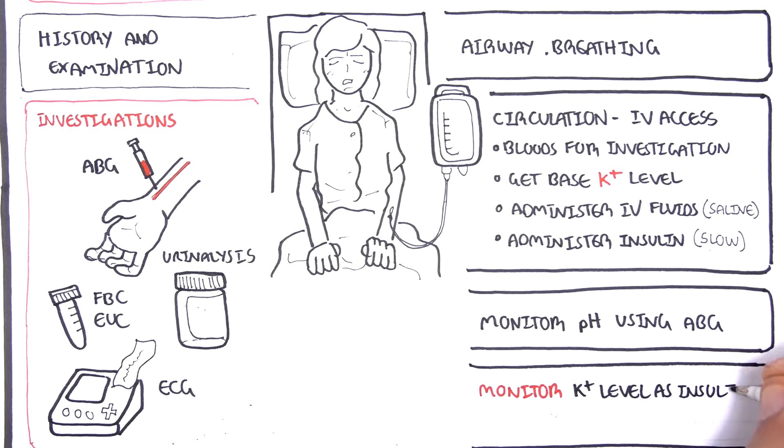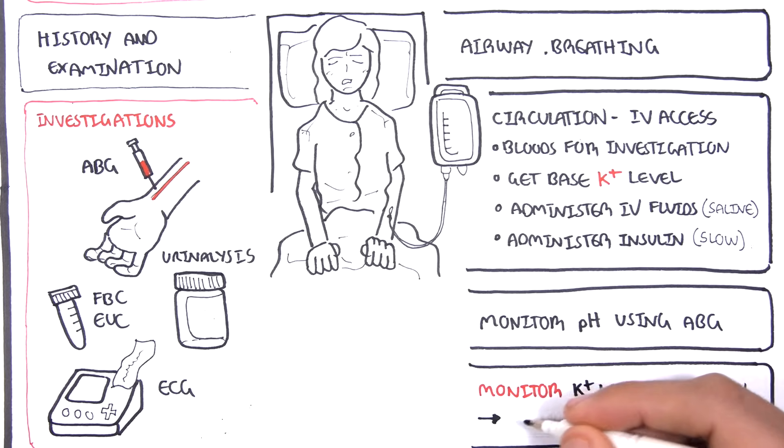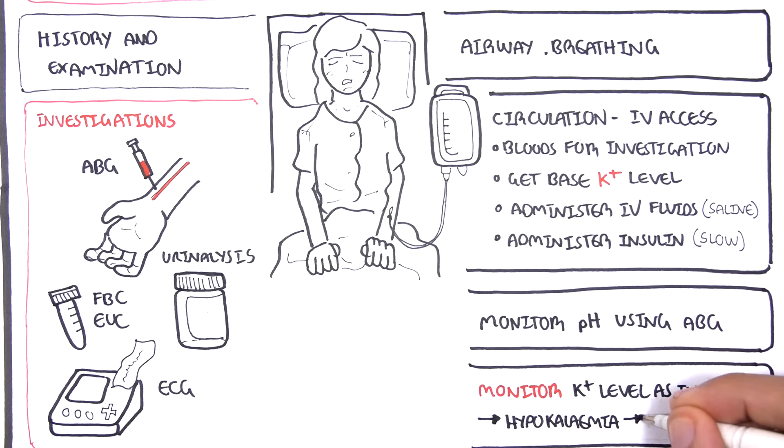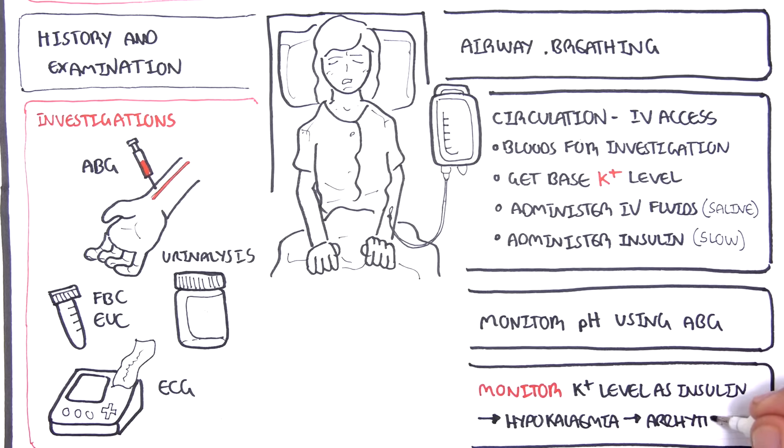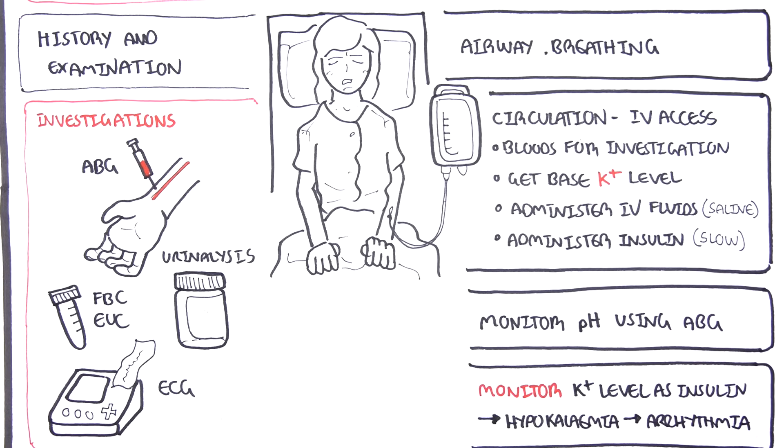The reason it is important to measure serum potassium levels is insulin is being administered. Because insulin will actually cause hypokalemia. If you get hypokalemia, you can actually trigger an arrhythmia. Sometimes calcium gluconate can be administered to protect the heart from these hypokalemia-induced arrhythmias.